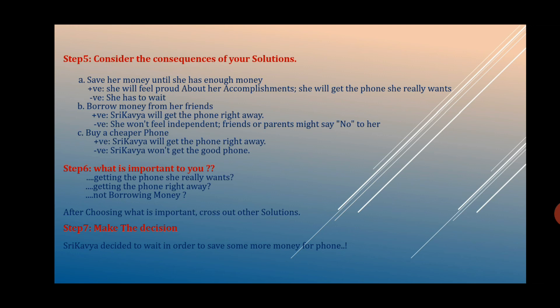For the second option, borrowing money from her friends: in the positive manner, Sri Kavya will get the phone right away. In the negative manner, she won't feel independent — she is depending upon her friends or parents, and they might say no. For buying a cheaper phone: the positive is she will get the phone right away, but the negative is Sri Kavya won't get the good phone she really wants.